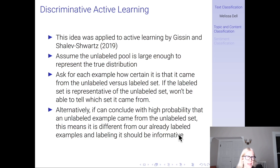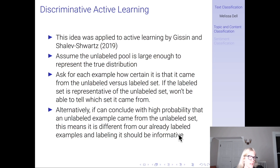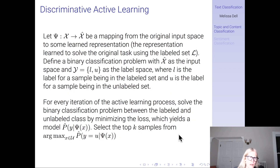This idea was applied to active learning in 2019. Assuming the unlabeled pool of data is large enough to represent the true distribution, the basic motivation is that for each example we could potentially label, we ask how certain it is that it came from the unlabeled versus the labeled set. If the labeled set is representative of the unlabeled set, we won't be able to tell which set it came from. Alternatively, if we can conclude with high probability that an unlabeled example came from the unlabeled set, this means it is different from the data we've already labeled, and labeling it should be informative.